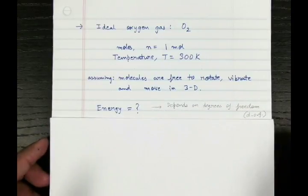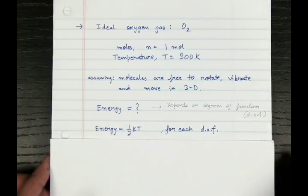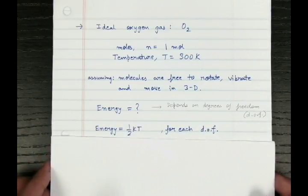The energy of any gas depends on the degrees of freedom of the gas. So the energy is half KT for each degree of freedom. Here K is Boltzmann's constant and T is temperature.